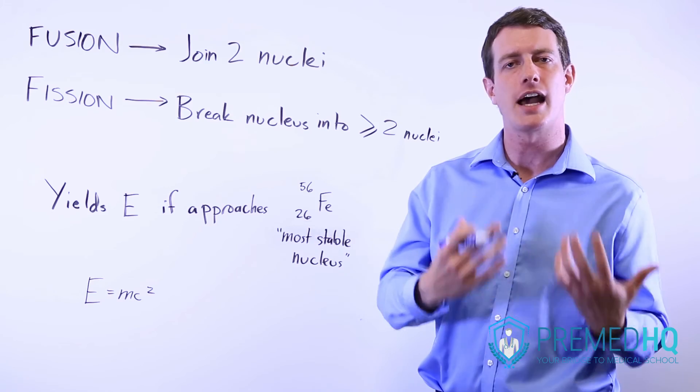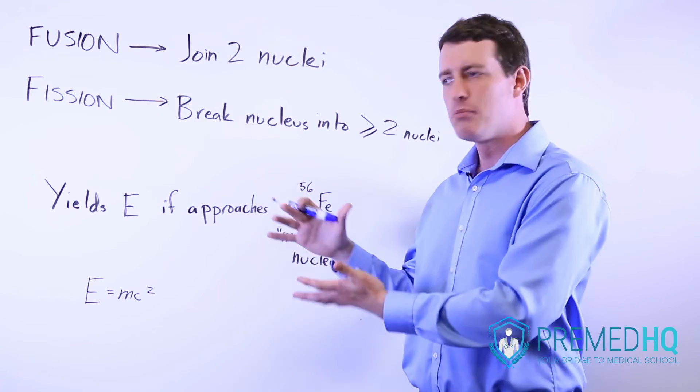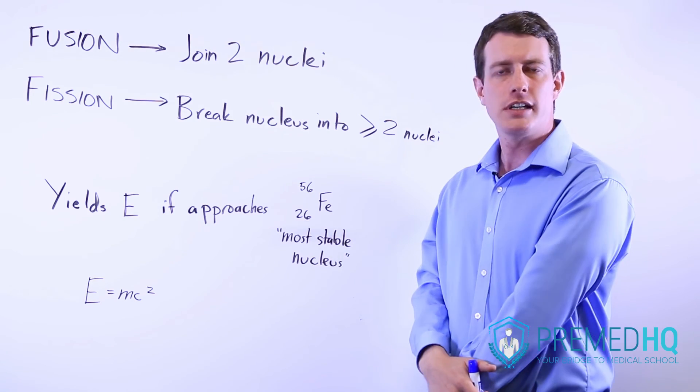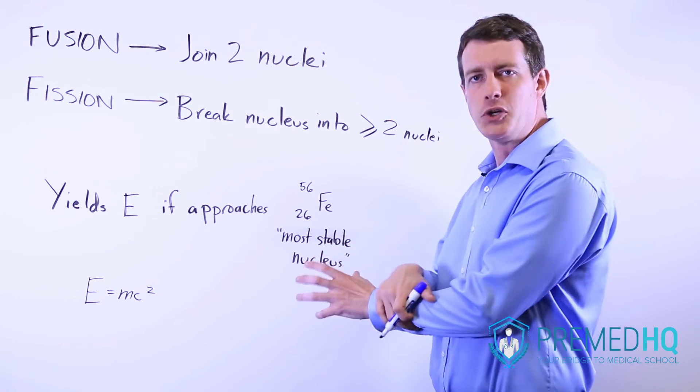If you lose mass from reactants to products, that's a mass defect. And that means that matter has gone toward producing energy.